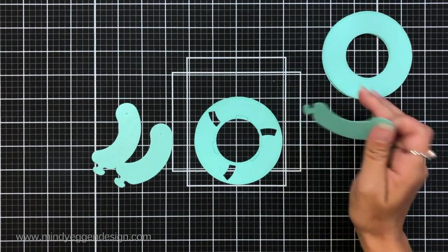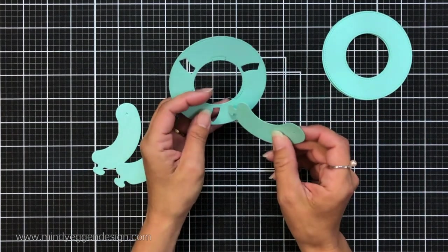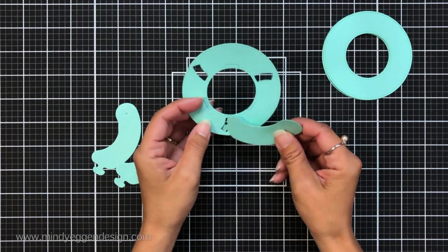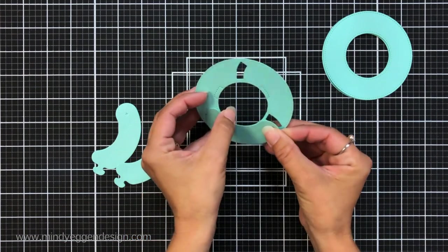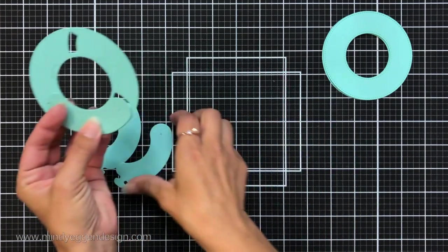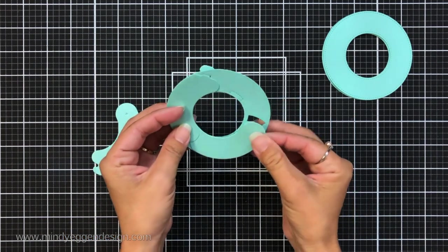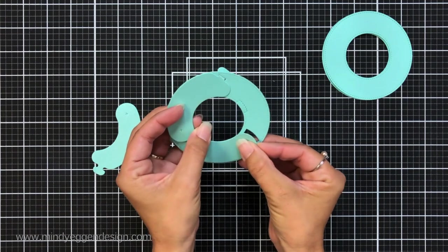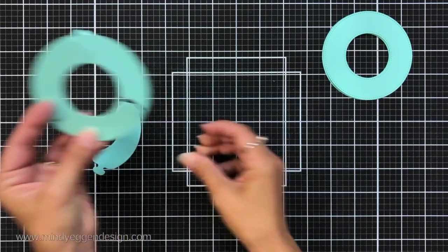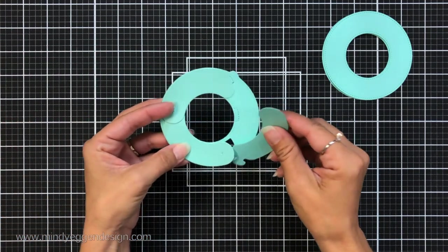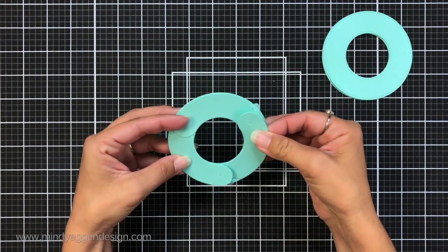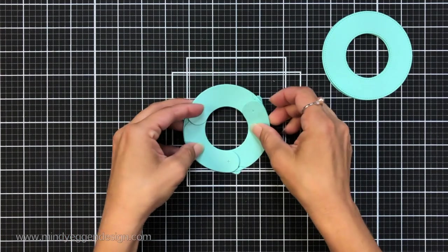To start with I'm going to take the hot dog shape that I die cut out three times from the shimmer cardstock. I'm going to take the tab and slide that into those slots that we die cut out earlier from one of our circles. Then I'm going to line the inner curve of that hot dog shape with the inside circle and I'll do that three times. There's three slots just kind of gently holding those in place.